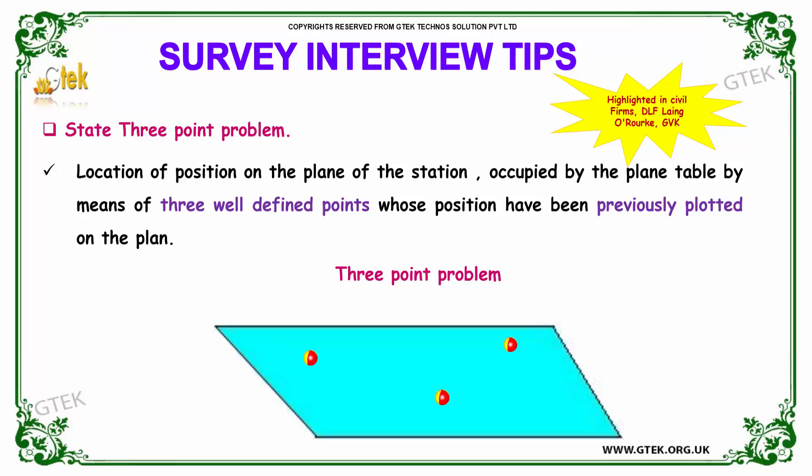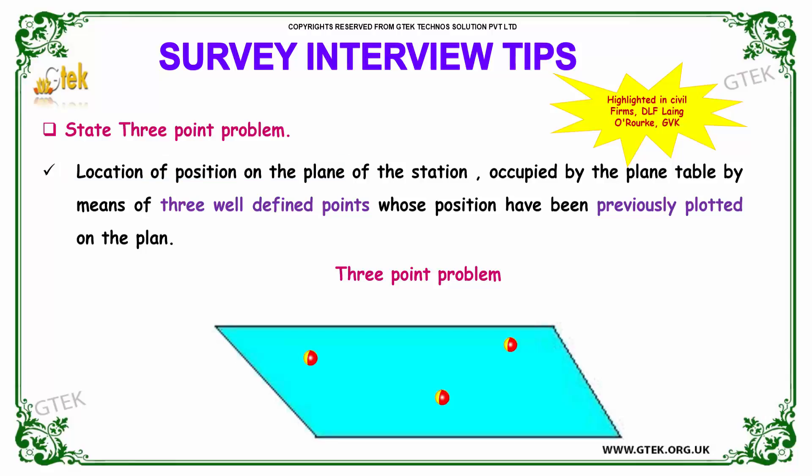Our next question is: state the three point problem. The three point problem is the location of the position on the plane of the station occupied by a plane table by means of three well-defined points whose positions were previously plotted on the plan.